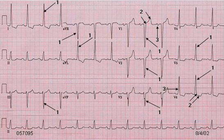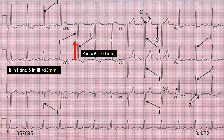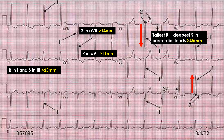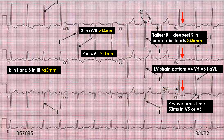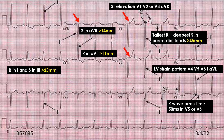This is a sample ECG tracing showing some of the voltage and non-voltage criteria of LVH. In the limb leads: R in lead 1 and S in lead 3 is more than 25 mm; R in AVL is more than 11 mm; S in AVR is more than 14 mm. In the precordial leads: tallest R plus deepest S is more than 45 mm. Increased R wave peak time in V6 and LV strain pattern in V4, V5, V6, 1, and AVL. And ST elevation in V1, V2, and AVR.